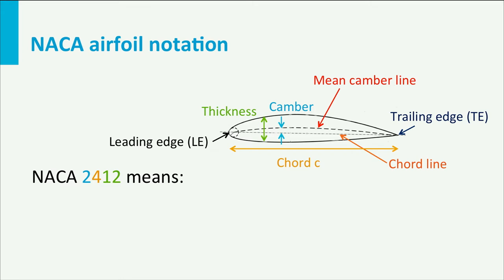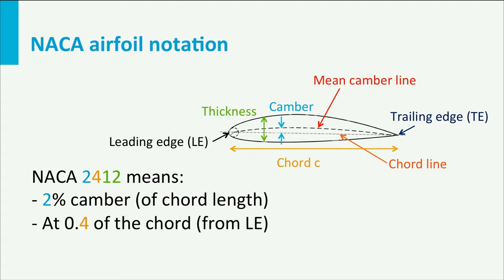As an example, NACA 2412. The first two means that the profile has a camber of 2 percent, so it has a maximum distance of 2 percent times the chord length between camber and chord line. The second digit indicates the position of that camber with reference to the leading edge: 0.4 times or 40 percent of the chord length. The last two digits indicate the thickness of the profile, in this case 12 percent of the chord length.